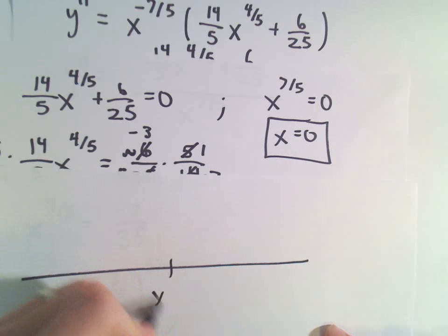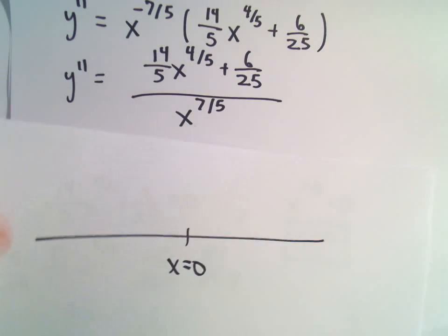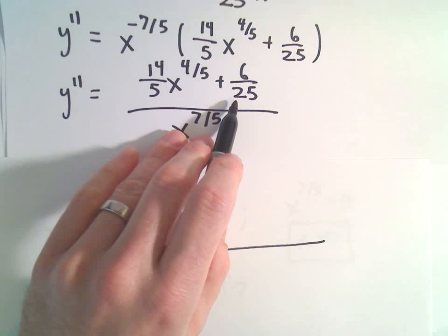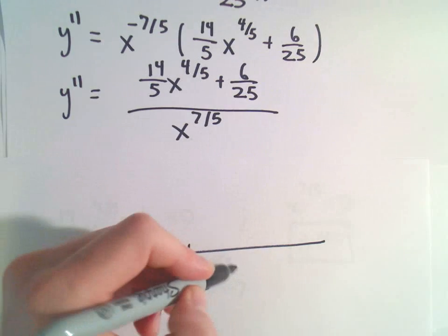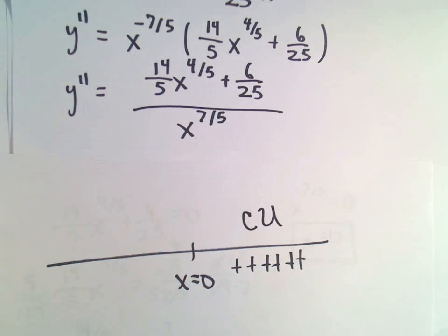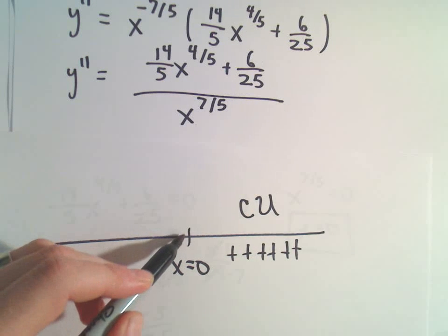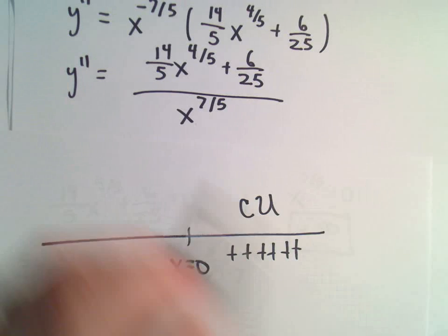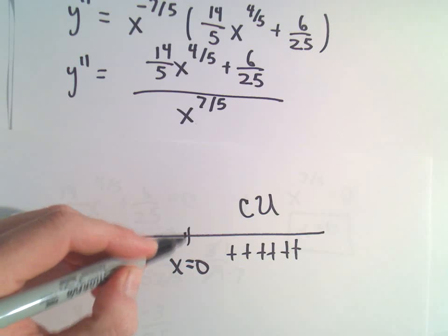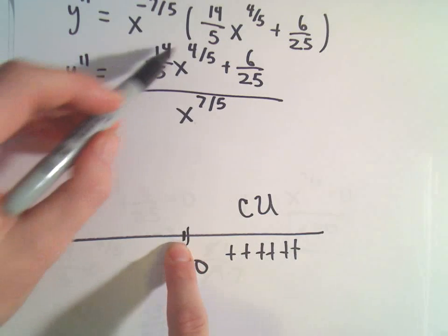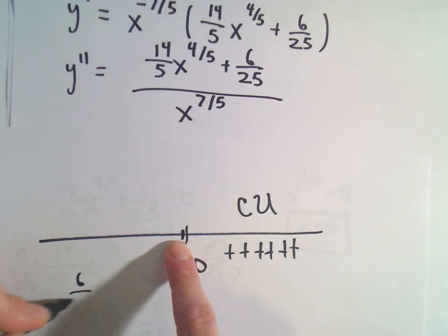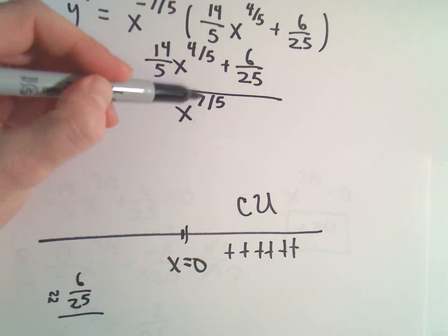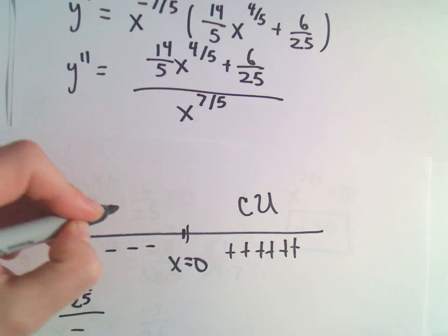Let's find the sign of the second derivative around x equals 0. Plugging in positive 1: 14/5 plus 6/25 is certainly positive, and 1 to the 7/5 is positive — so the function is concave up to the right of 0. Plugging in something close to 0 but negative: the numerator is approximately 6/25, which is positive. But a negative number to the 7th power is negative, and its fifth root is still negative — so the denominator is negative. Positive over negative: the function is concave down to the left of 0.